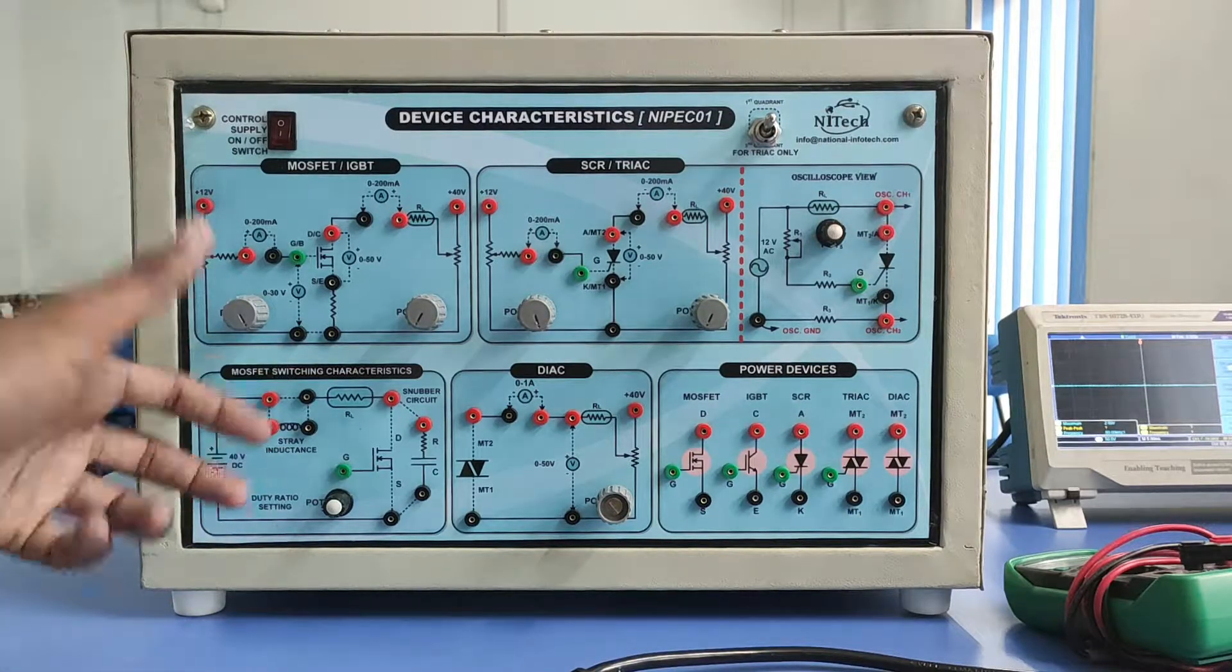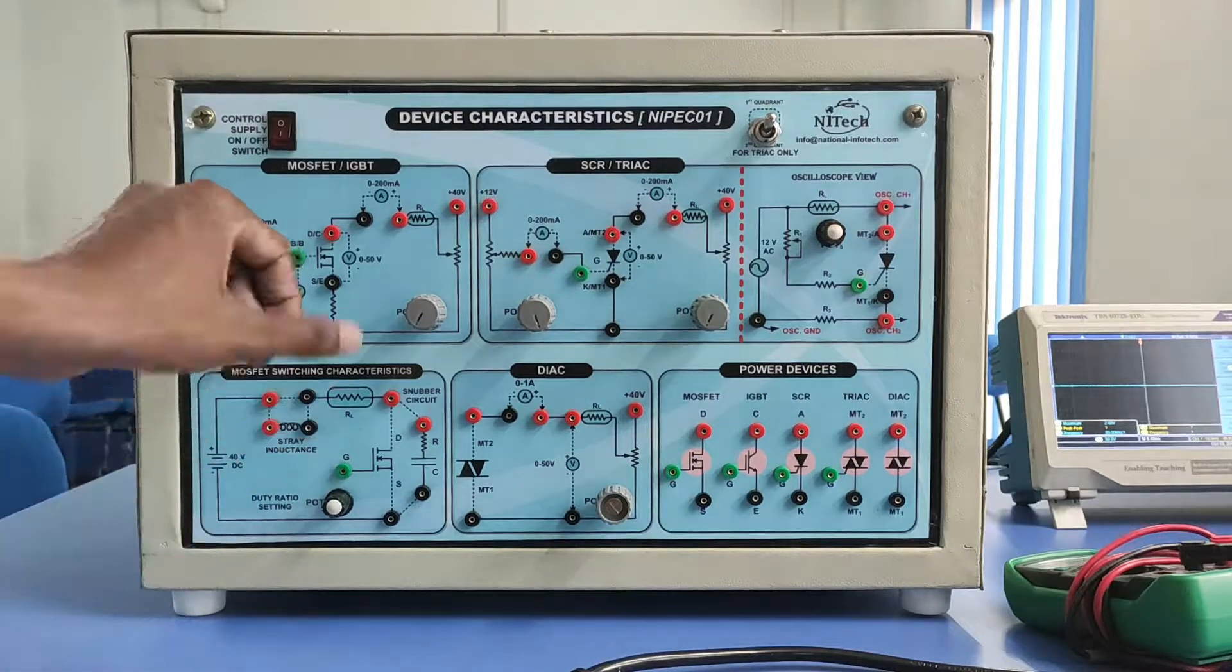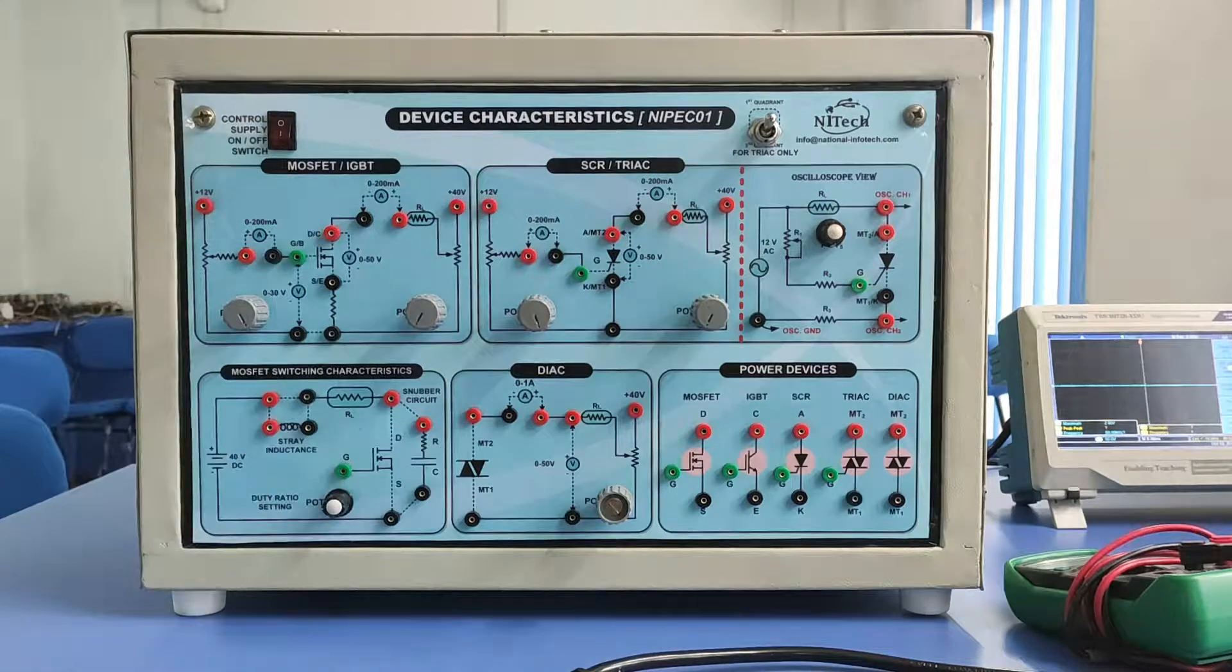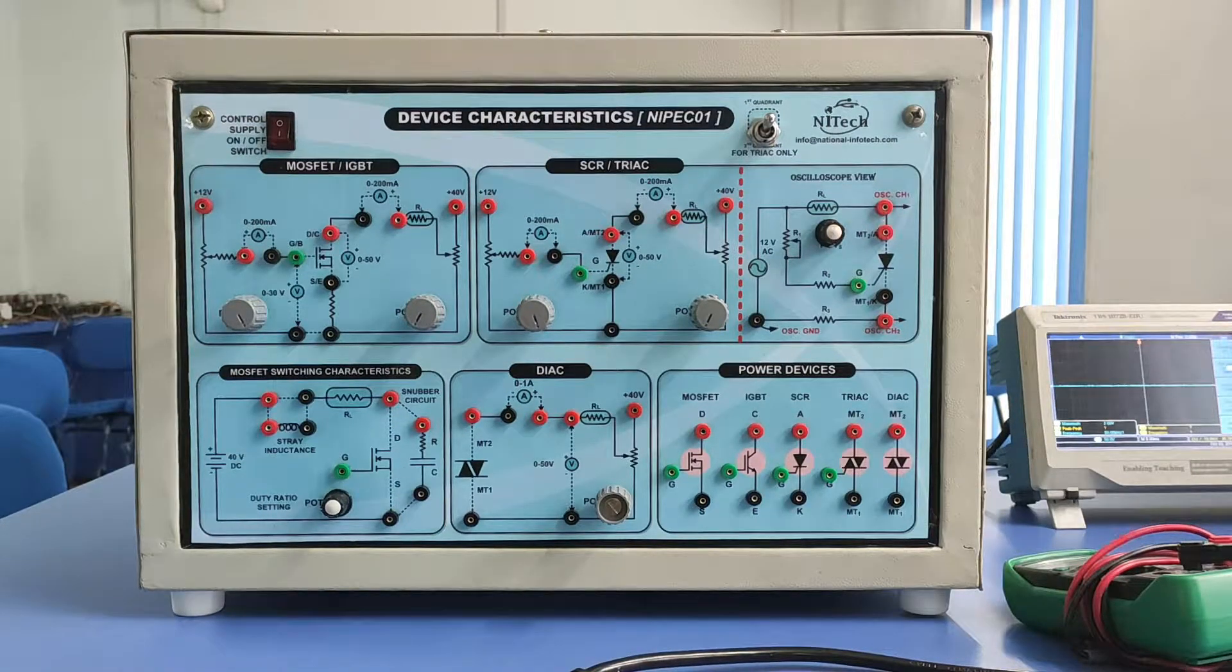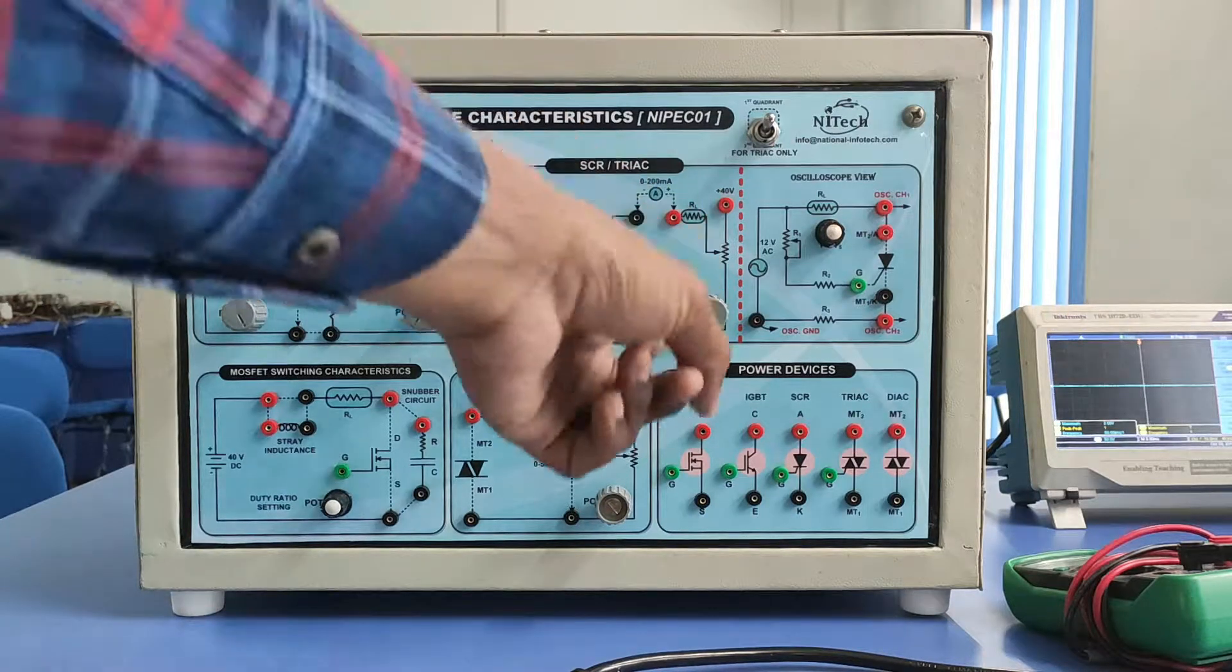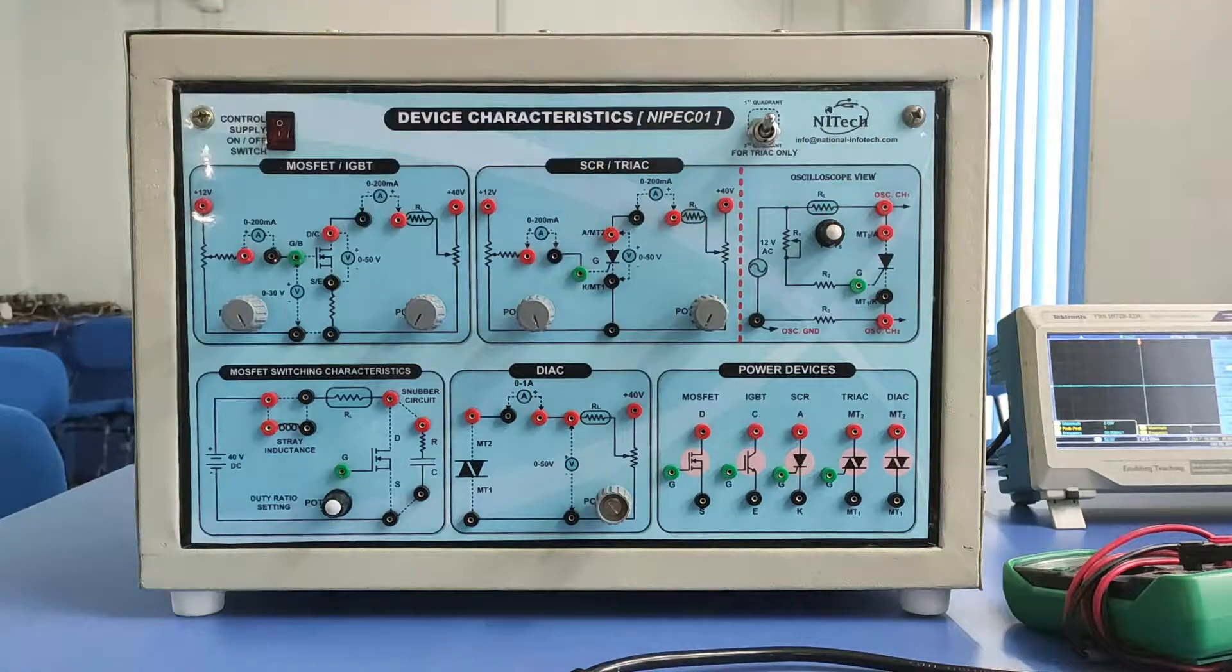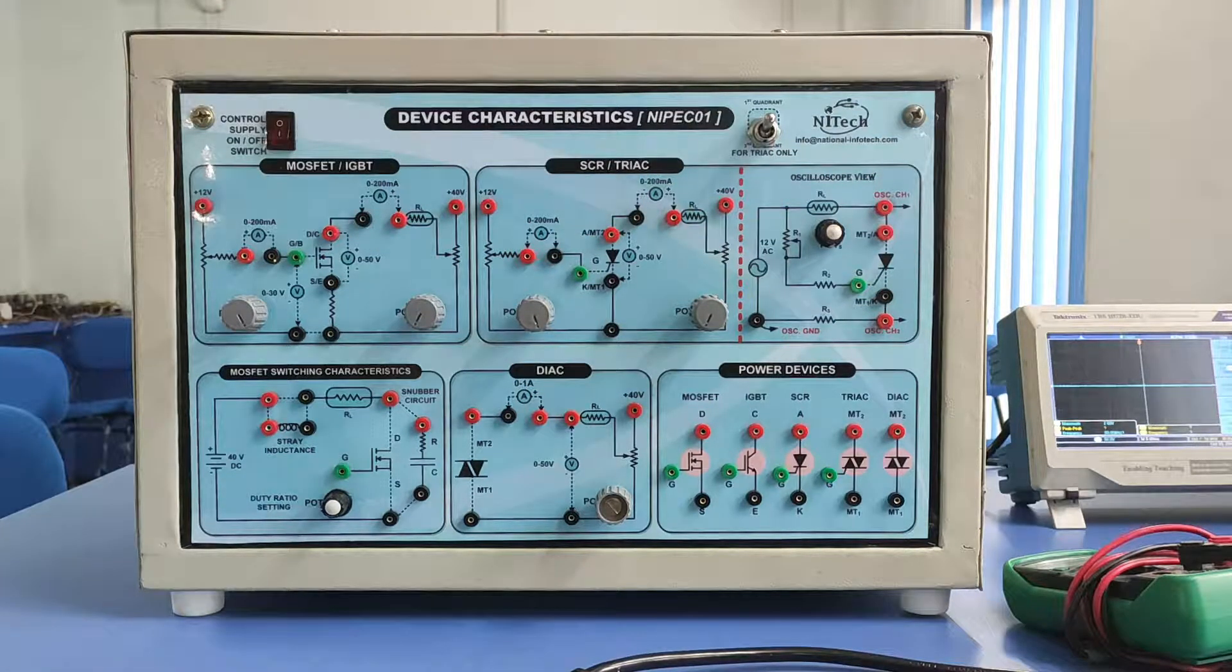Some knobs are given to control your gate-emitter voltage, similarly gate-source voltage for MOSFET, and to control anode current. Everything is given in our control.